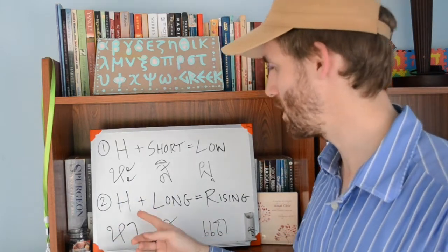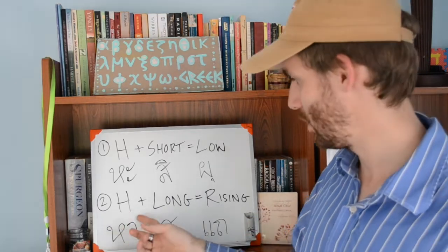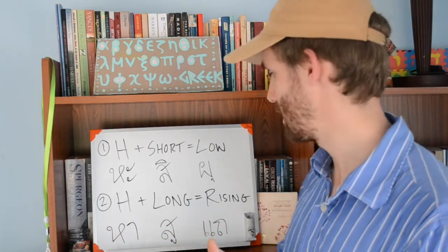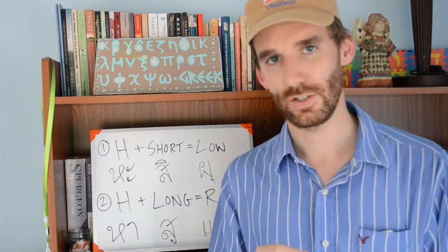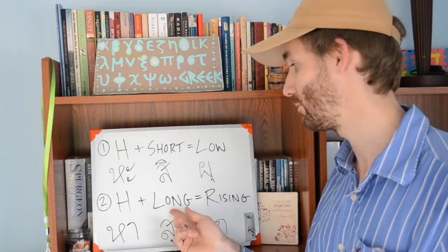Then number two. Any of the high class consonants, any of the 11, plus a long vowel, it's going to equal a rising tone. It's got to be a long rising tone because of the long vowel.